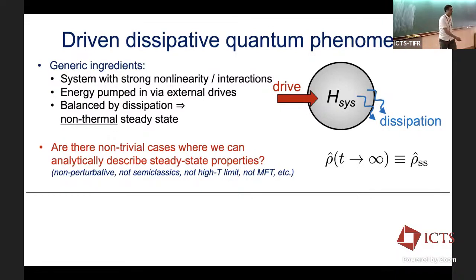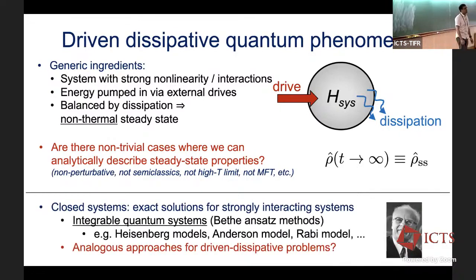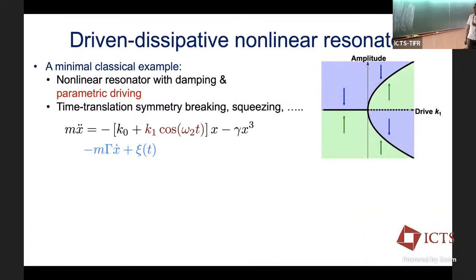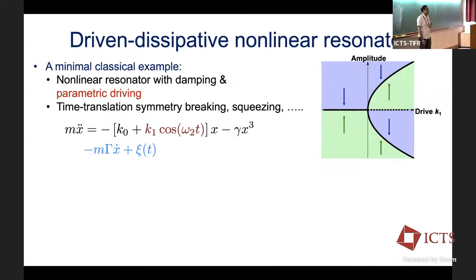That seems like a tall order. In closed systems without driving and dissipation, there are strongly interacting systems where we can make exact statements—the whole field of integrable quantum systems and Bethe Ansatz techniques. One could try to apply Bethe Ansatz techniques to open quantum systems, and there's interesting work in that direction. What I'll tell you about is a distinct theoretical approach to make exact statements on driven dissipative systems. For concreteness, consider one of the simplest driven dissipative classical systems: a parametrically driven nonlinear harmonic oscillator.